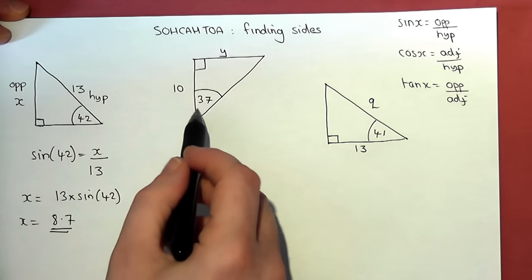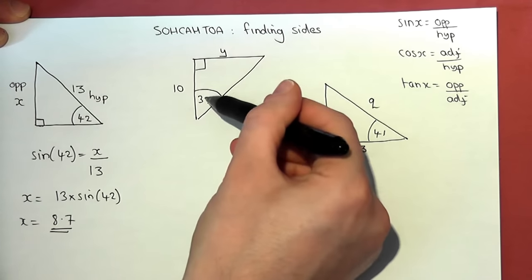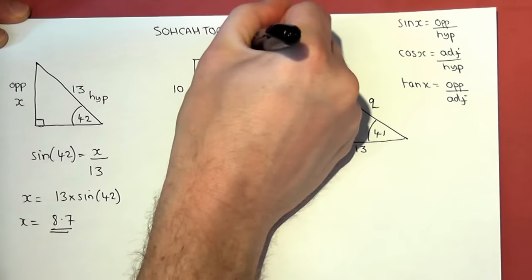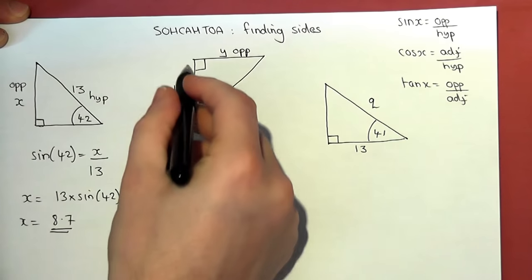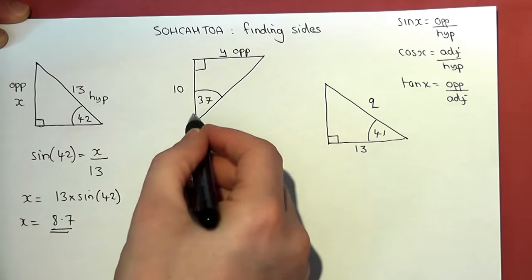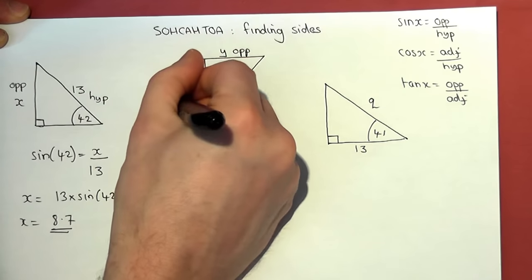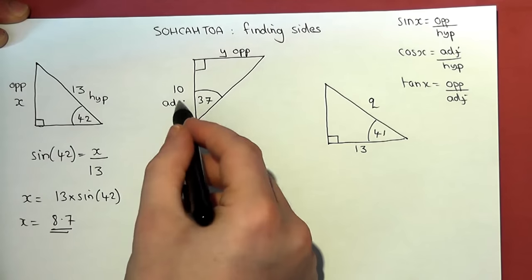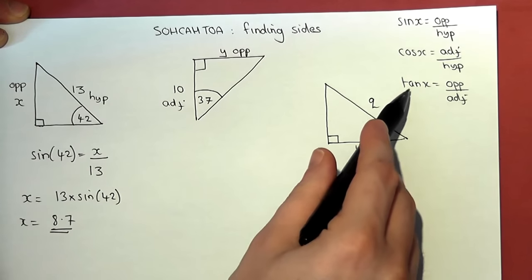The second one. We have a known and an unknown. The unknown y is opposite the angle, so that's the opposite. Whereas the 10 is not the hypotenuse — it is next to the angle, so it is the adjacent.